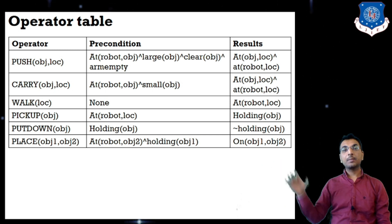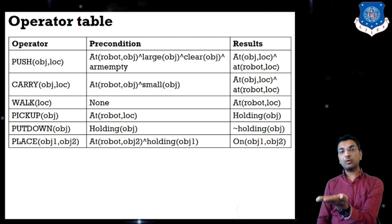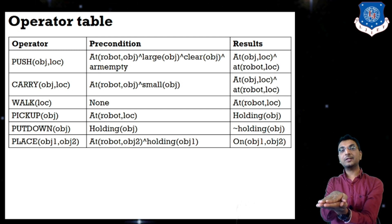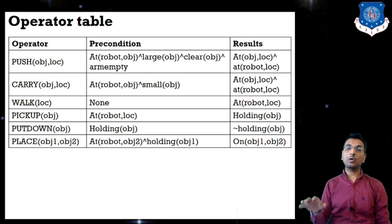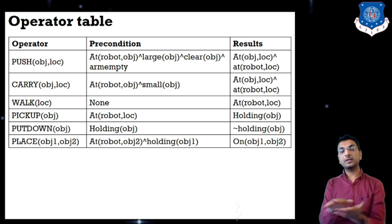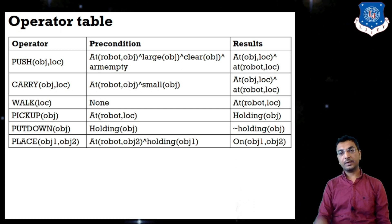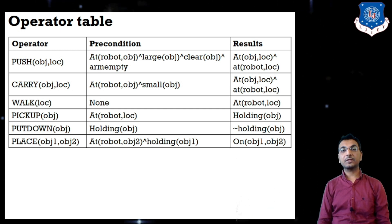The last operator is place(object1, object2) — meaning I have one object and I want to put another object on top of it. The preconditions are: at(robot, object2) and holding(object1). The result is object1 is on object2. So: pickup means to pick up the block, putdown means to put the block on the ground, and place means to put one object on top of another object.